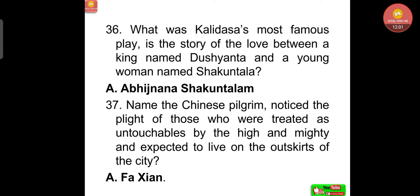Kalidasa's most famous play is the story of the love between a king named Dushyanta and a young woman named Shakuntala — the well-known Abhijnana Shakuntalam. The Chinese pilgrim Fahian noticed the plight of those treated as untouchables by the high and mighty, who were expected to live on the outskirts of the city.